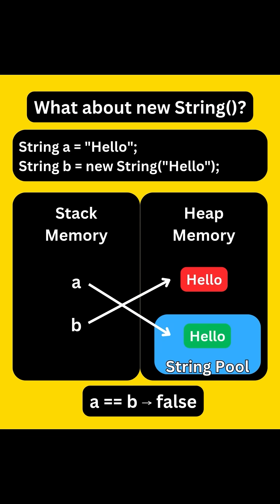So what if we write String B equals new String('hello')? This creates a new object in the heap outside the pool. So now A == B is false, because there are two different objects.